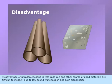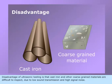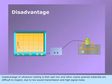The disadvantage of ultrasonic testing is that cast iron and other coarse-grained materials are difficult to inspect due to low sound transmission and high signal noise.